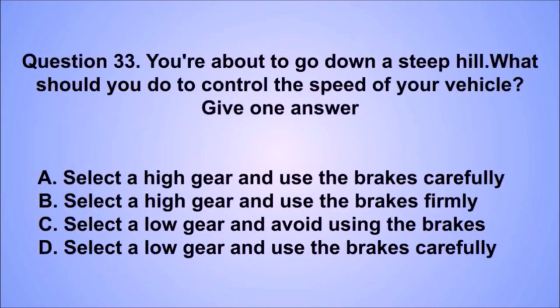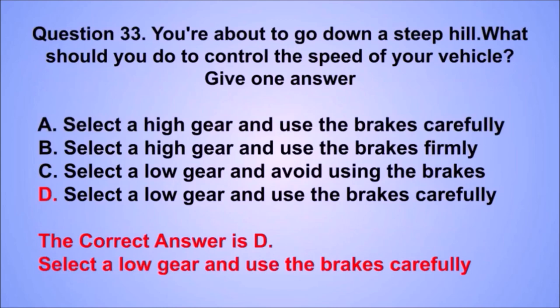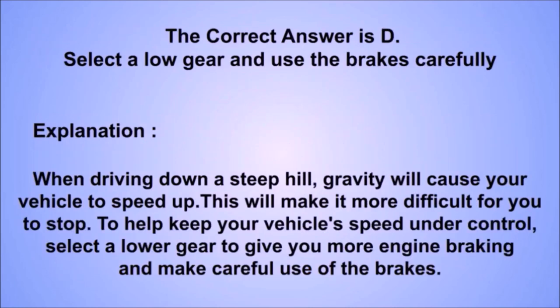Question 33. You're about to go down a steep hill. What should you do to control the speed of your vehicle? The correct answer is D: Select a low gear and use the brakes carefully. When driving down a steep hill, gravity will cause your vehicle to speed up. Select a lower gear to give you more engine braking and make careful use of the brakes.